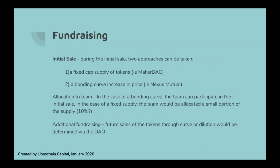One of the reasons Ethereum and other applications are so interesting is that you can still perform an initial fundraising sale. There are two different ways we've seen this: a fixed cap supply of tokens — for example, the million tokens for MakerDAO — or a bonding curve for increasing price, for example Nexus Mutual. Usually there's some allocation to the team. In the case of a fixed supply, the team would be allocated a small portion — perhaps 10%, and usually less than the majority. You should also consider how you plan to fundraise at a later time, remaining open for future sales.